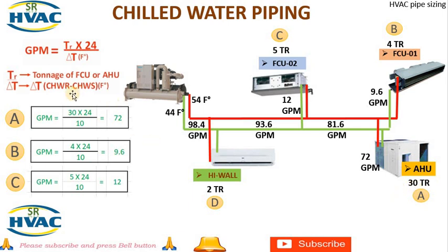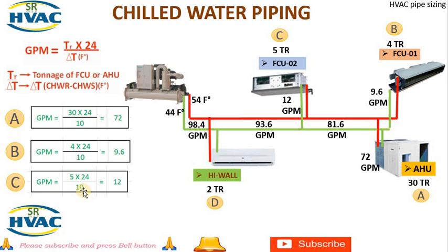For the AHU, the capacity is 30 tons. Applying the formula: 30 × 24 ÷ ΔT, where ΔT = 54 − 44 = 10°F, gives us GPM for the AHU = 72 GPM. For FCU1, with capacity 4 tons: 4 × 24 ÷ 10 = 9.6 GPM. For FCU2, with capacity 5 tons: 5 × 24 ÷ 10 = 12.0 GPM.